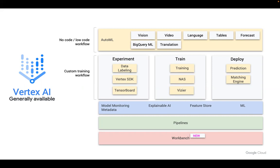For custom training on an existing workflow, there are three categories: experimenting (data processing), training the data, and deploying the data — three verticals with multiple provisions for data analysis, training, and deployment, providing a good amount of customization. Additionally, they have metadata store, model monitoring, explainable AI, feature store, ML pipelines, and a workbench. This entire suite is what we are going to see in this presentation.